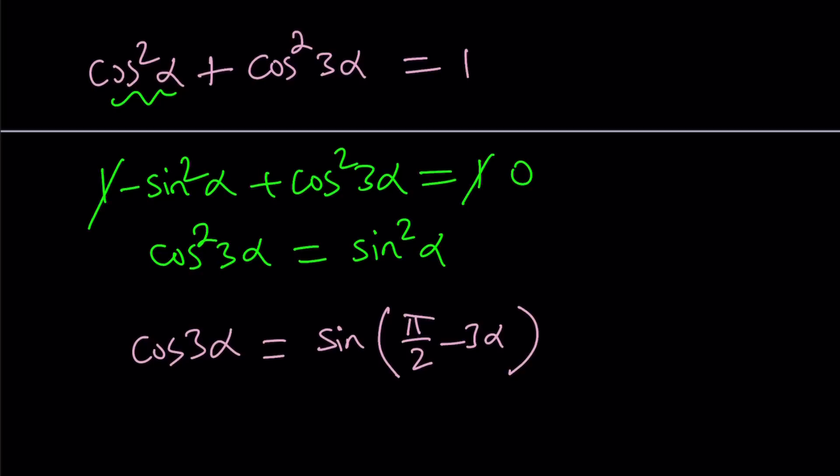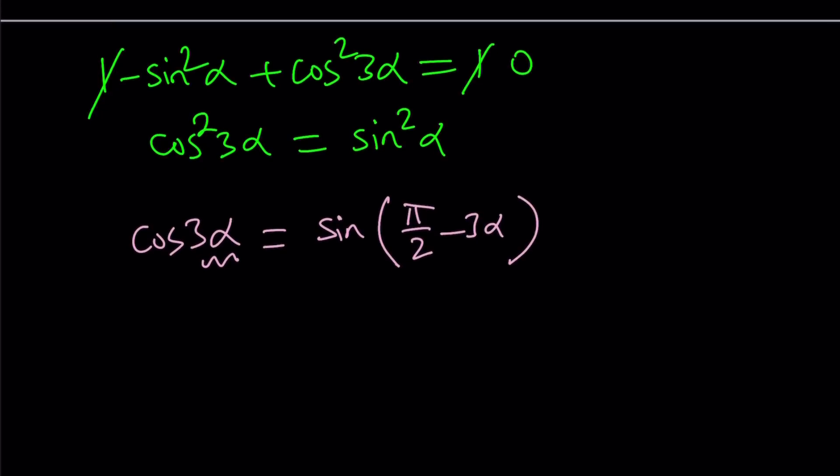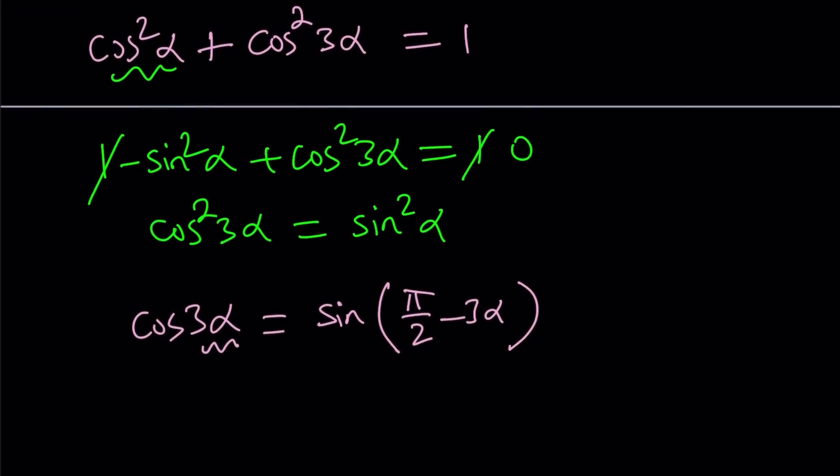So basically if you are trying to turn cosine into sine or sine into cosine, all you have to do is take the angle, subtract from pi over 2 to get the complement, and then you're going to achieve your goal. So if you replace cosine 3 alpha with this, but of course it's squared,